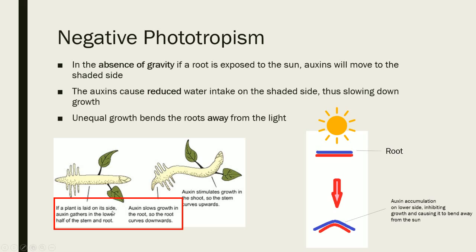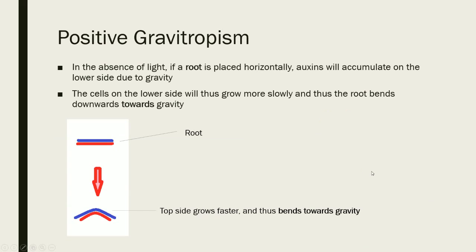This is a diagram of phototropism in action, and the simplified diagram shows the sun present and the growth response. Now let's look at gravitropism. In the absence of light, if a root is placed horizontally, the auxins will accumulate on the lower side due to gravity. The cells on the lower side will thus grow more slowly, and therefore bend the root downwards and towards gravity. This time the plant is moving towards the stimulus — gravity — so therefore this is positive gravitropism. This makes sense because the root growing deeper into the soil is beneficial for the plant.